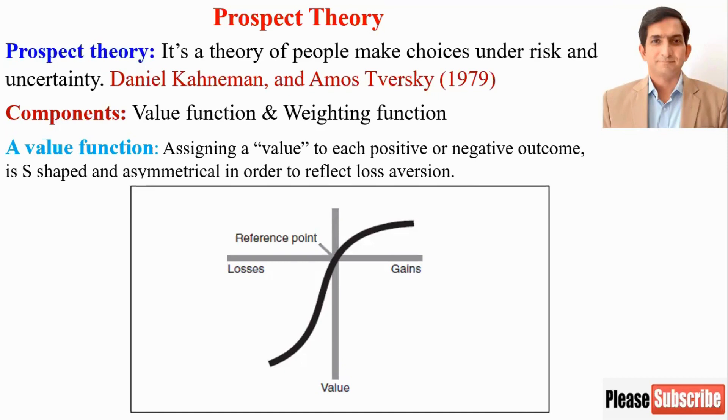Now I discuss value function in detail. It was a key diagram that Daniel Kahneman and Amos Tversky drew in their paper. It's S-shaped. It means people do not think about gains and losses linearly.